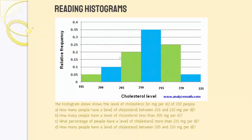Now I want to do a quick example about reading a histogram — what type of information you can pull from it. This histogram shows the level of cholesterol in milligrams per deciliter of 200 randomly selected people. We're using the lower limit cutoff, so the first group goes from 195 to under 200, the next from 200 to under 205, then 205 to under 210, and so on.